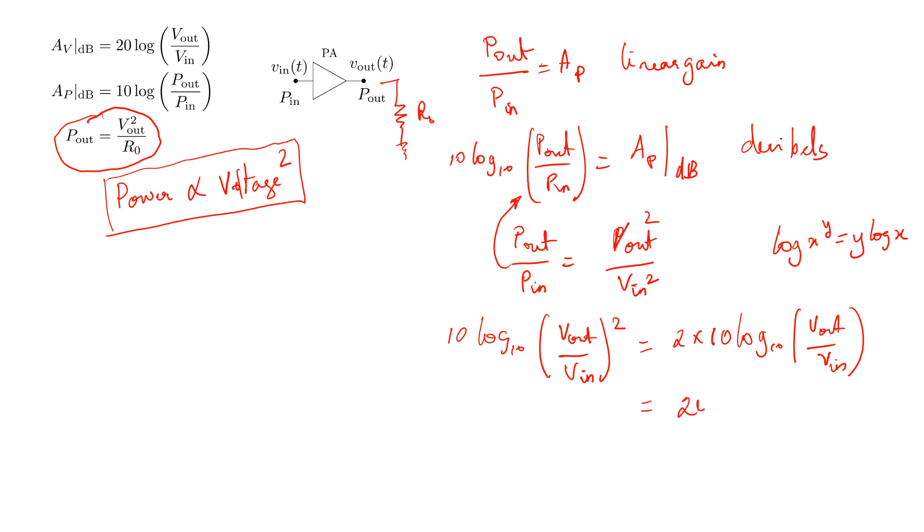So the same A_P in dB is going to be 20 log₁₀ of the ratio of the voltages, the output voltage to the input voltage. And that is the voltage gain in dB.